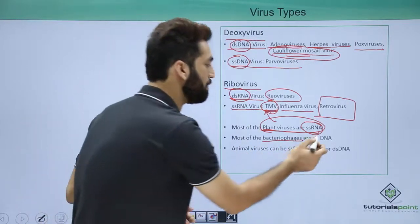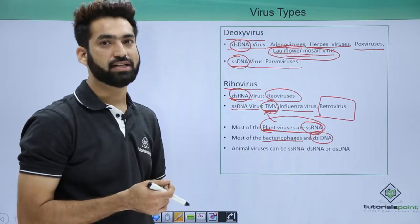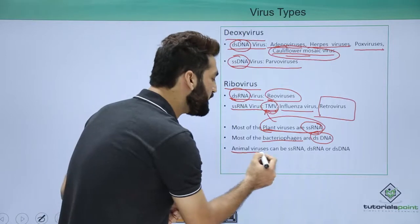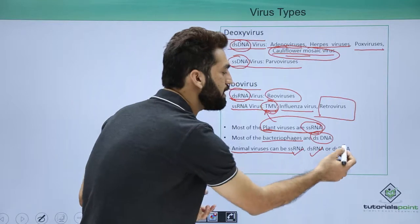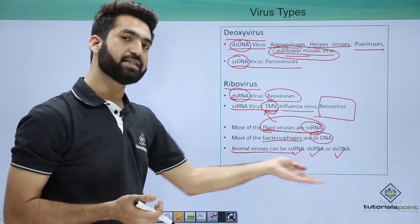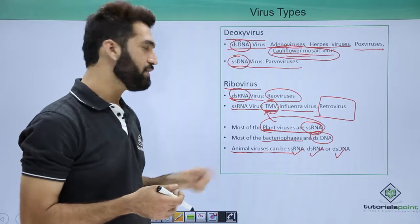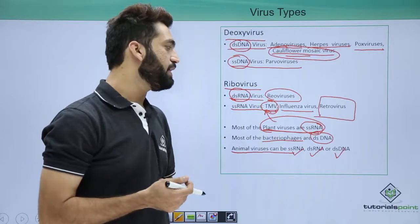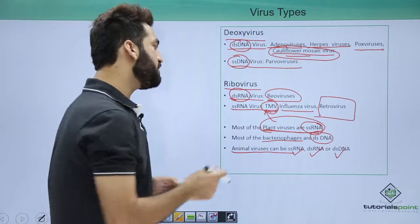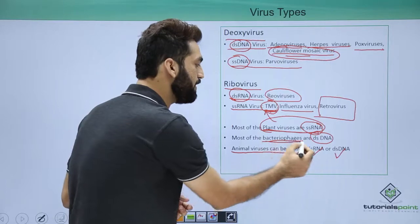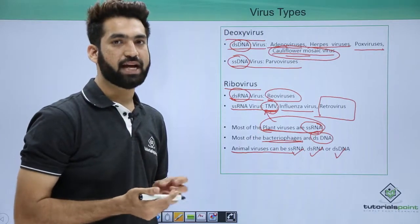Bacteriophages — viruses that kill bacteria — are double-stranded DNA. Animal viruses can be anything: single-stranded RNA, double-stranded RNA, or double-stranded DNA. So to summarize: plant viruses are mostly single-stranded RNA, bacteriophages are mostly double-stranded DNA, and animal viruses can be all three types. In the next session, I'll be starting with the details of TMV, that is tobacco mosaic virus.